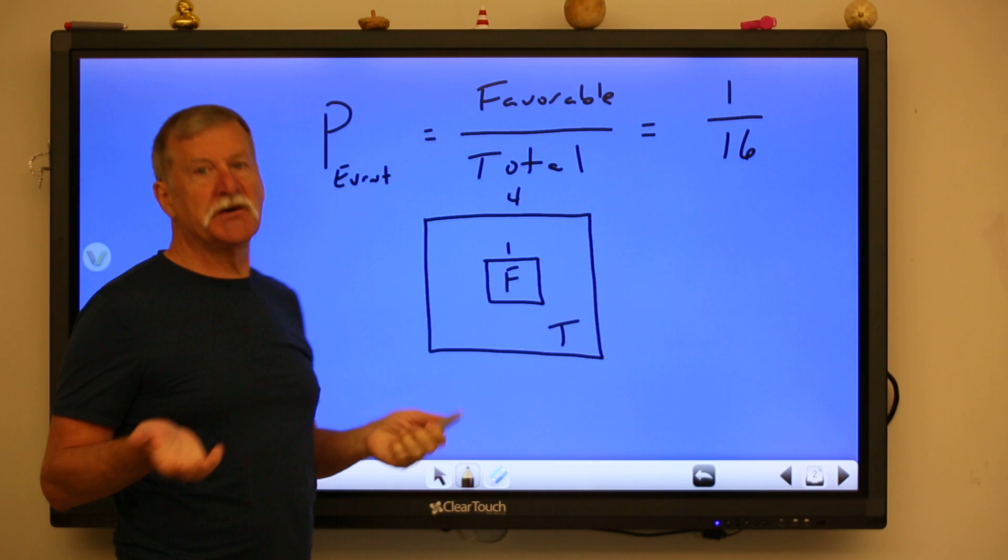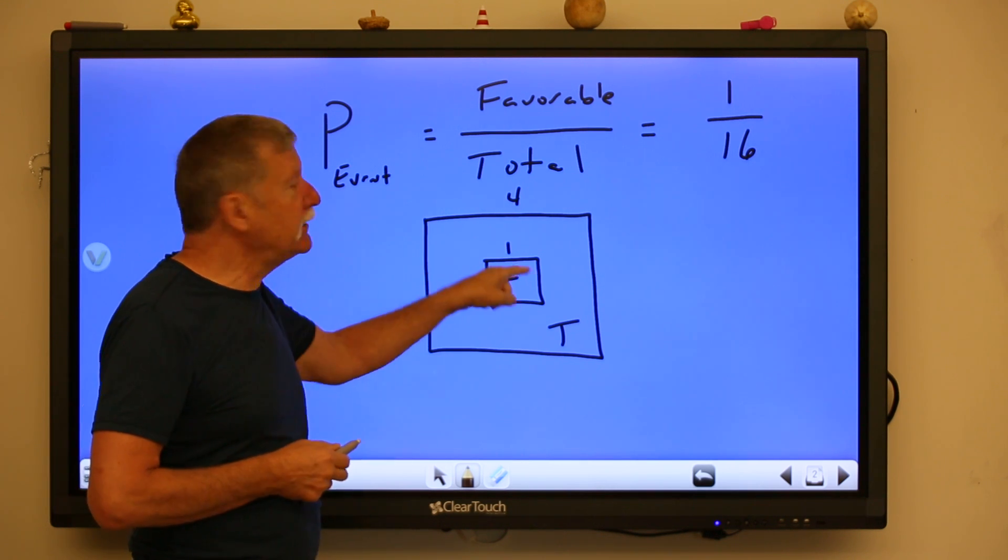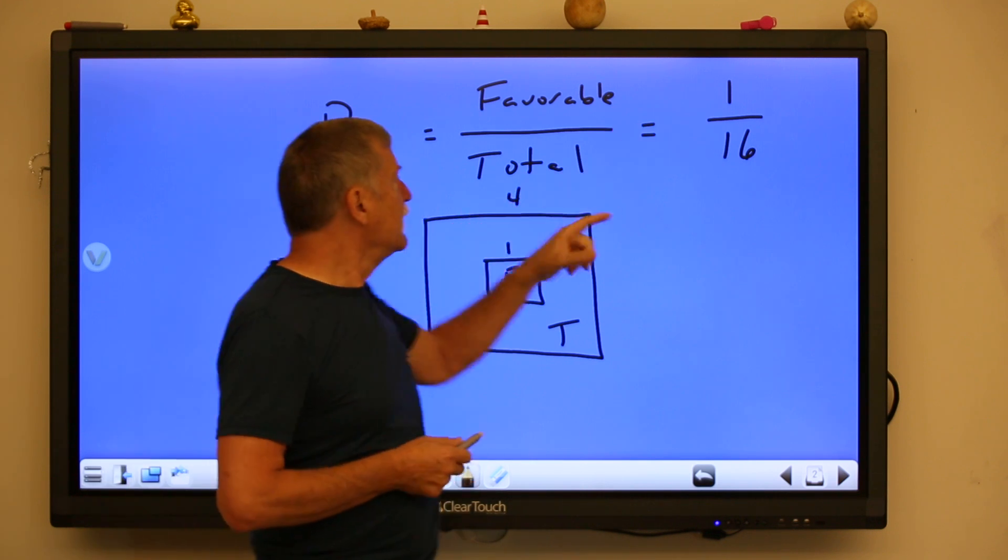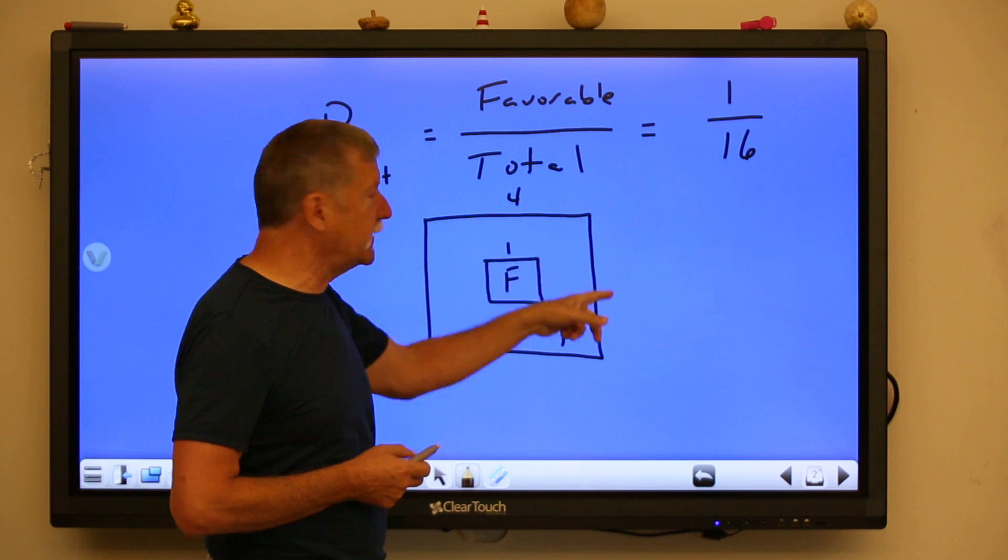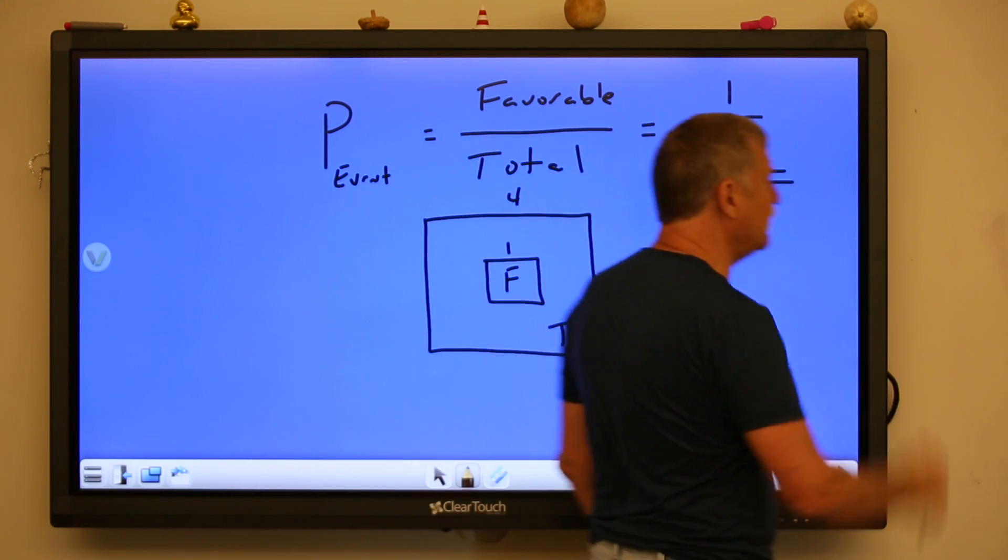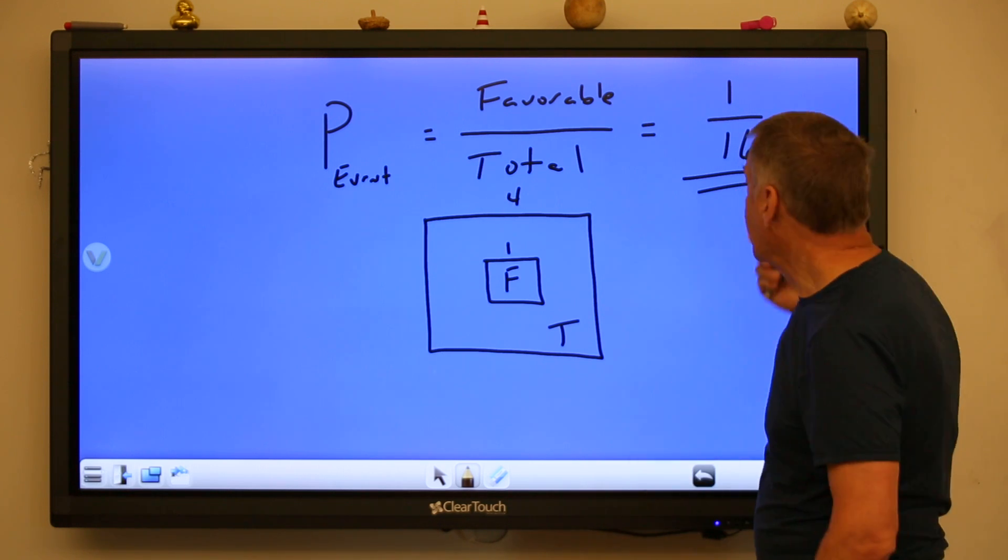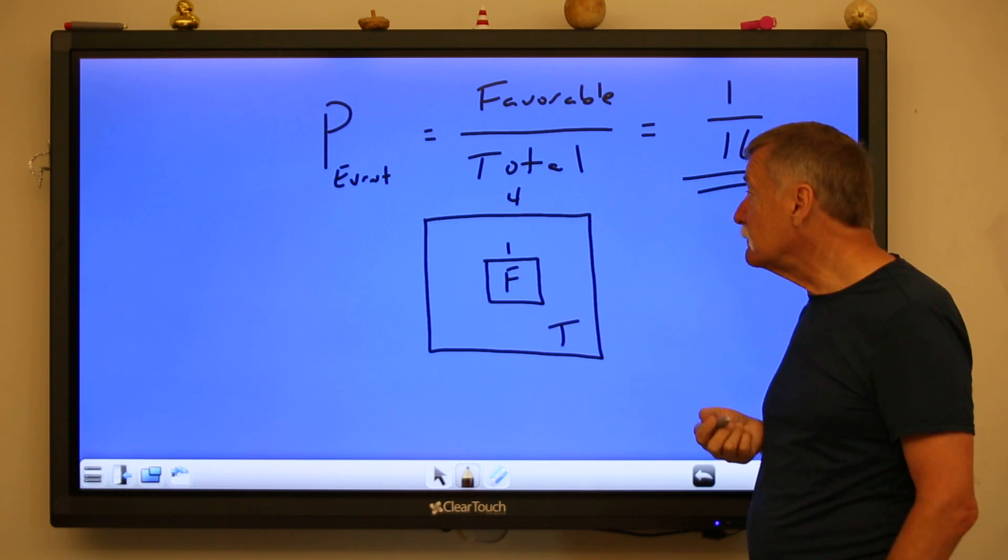So in geometric probability we compare the areas. The area of the little square, one times one, is one, compared to the total area, four times four, 16, says that we can quantify your chances of hitting the little square as one chance out of 16. Make sense? Yeah.